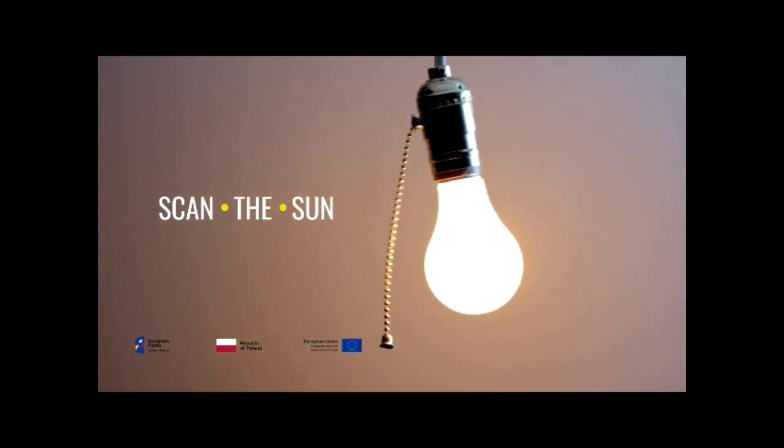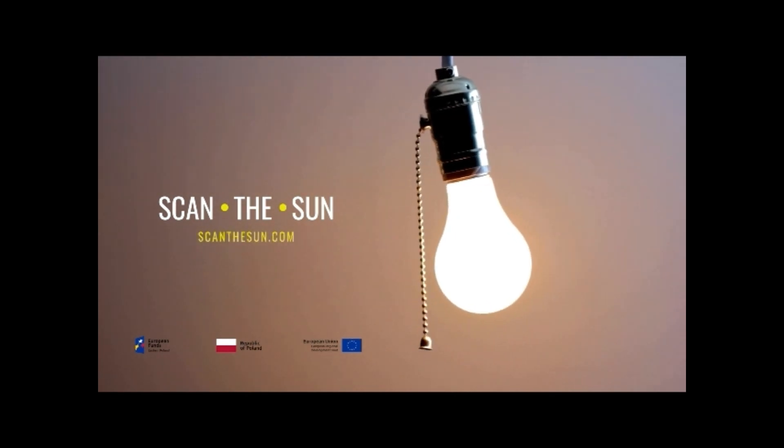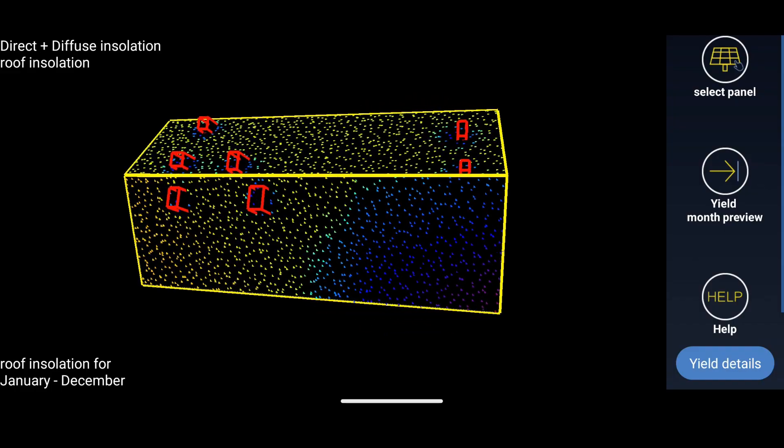Here is another example of solar potential for a roof partially shaded by nearby trees.